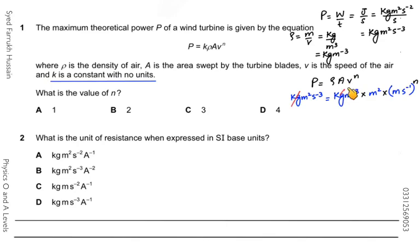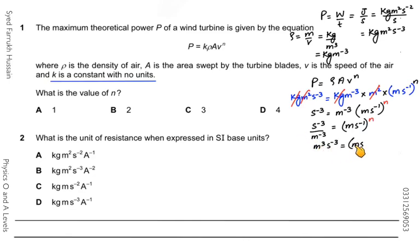After substituting and simplifying, we have s⁻³ on the left and m⁻³ × (m·s⁻¹)ⁿ on the right. Shifting m⁻³ to the left gives m³·s⁻³ = (m·s⁻¹)ⁿ. Taking the power 3 common: (m·s⁻¹)³ = (m·s⁻¹)ⁿ. Since the bases are the same, the powers are equal, so n = 3.